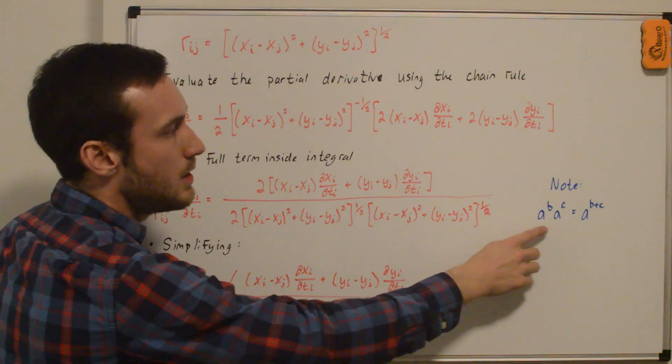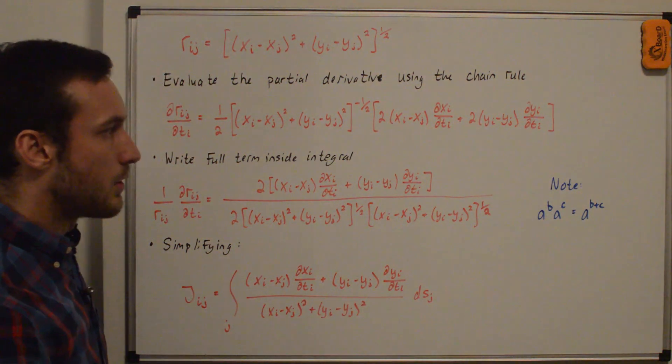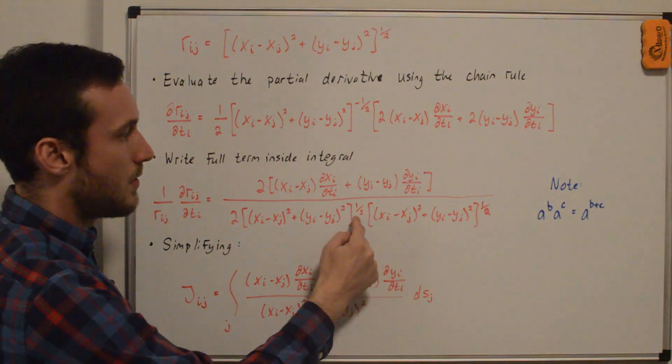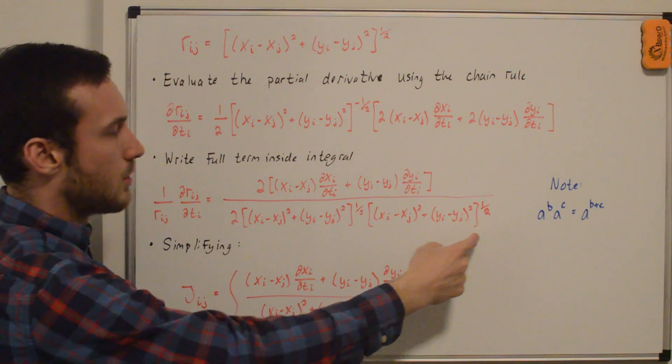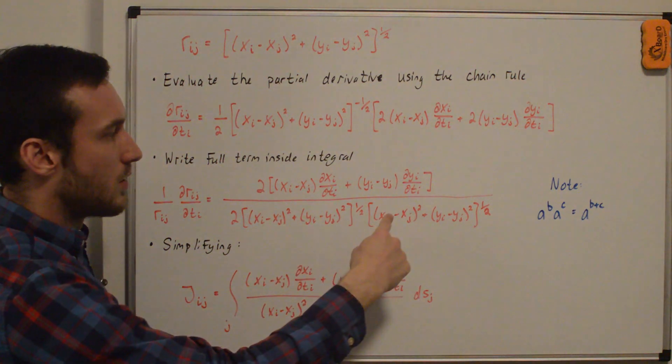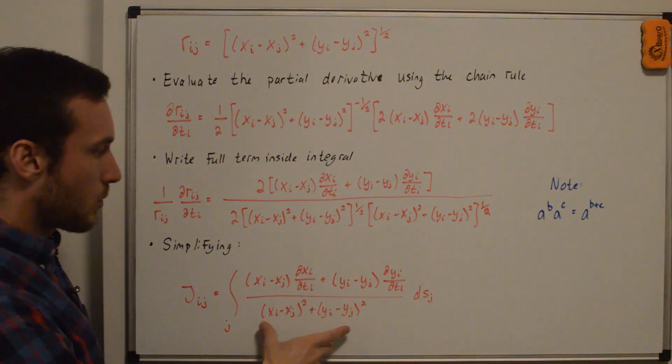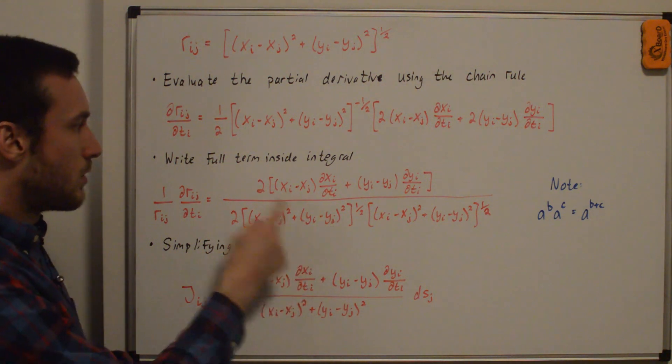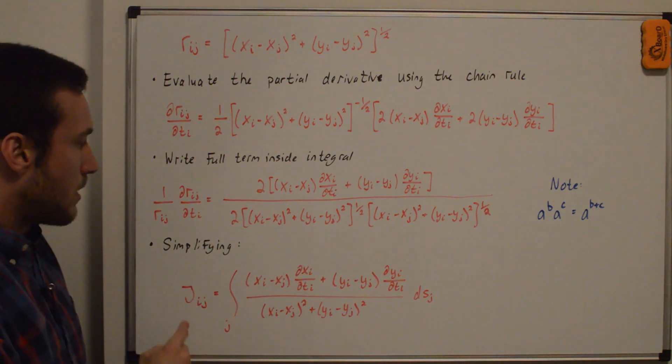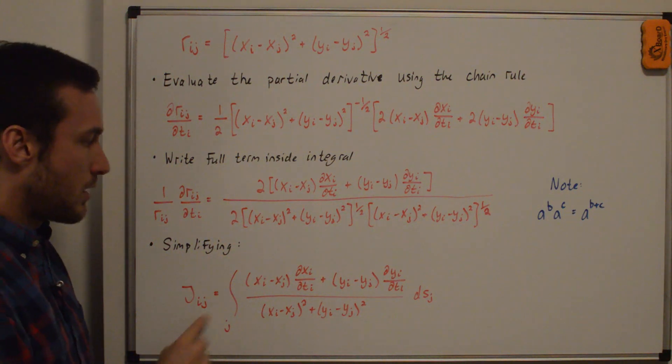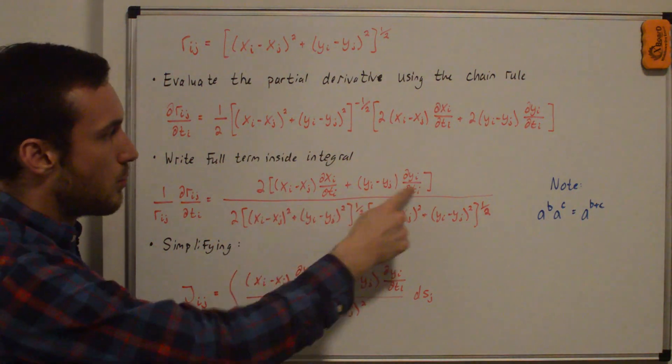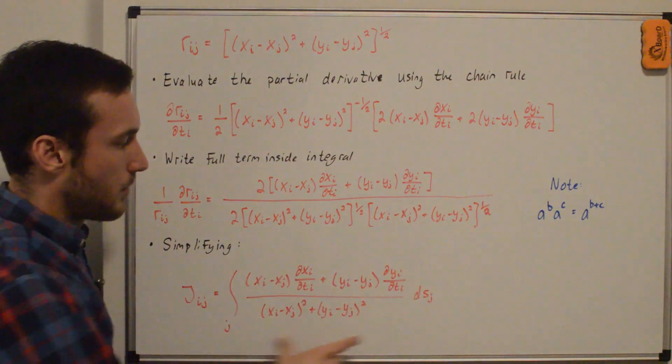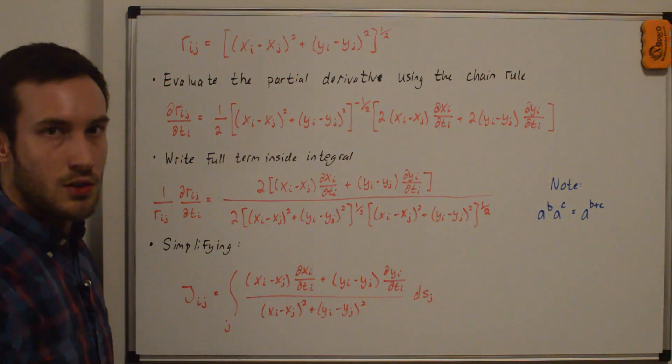And note that a to the b times a to the c is just equal to a to the b plus c. Note that this and this are the same. So that's our a and then b and c. So if we combine this down here, we can see that one half plus one half is just one, which is why the denominator here, we just have whatever's inside of that square root, the twos cancel. And we end up with our jij expression being the integral of the numerator, remember the two canceled, and then the denominator, which we found from this expression here, dsj.